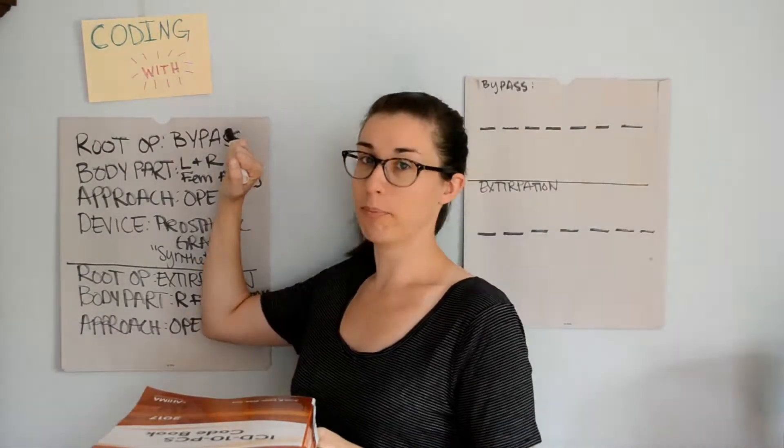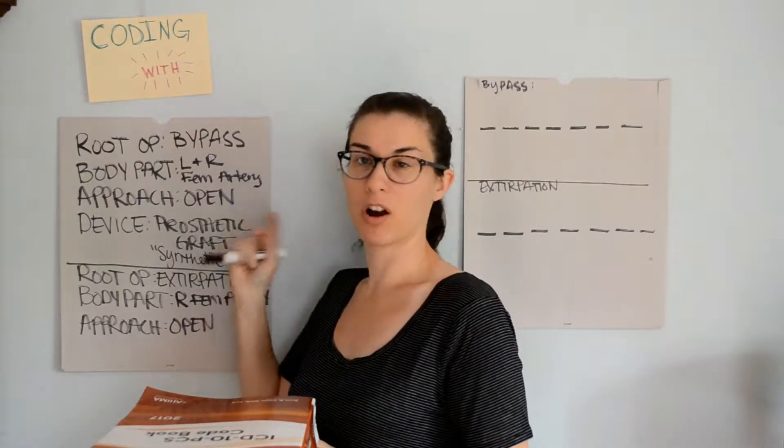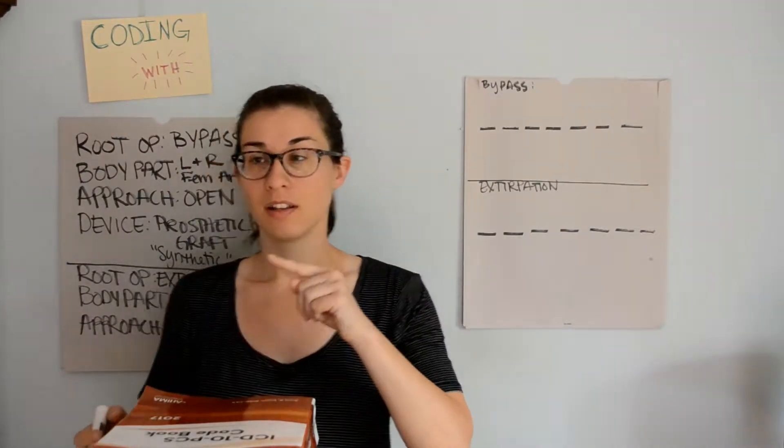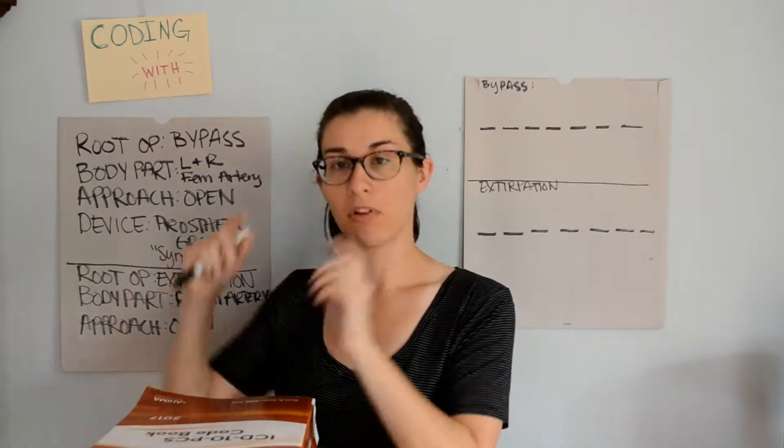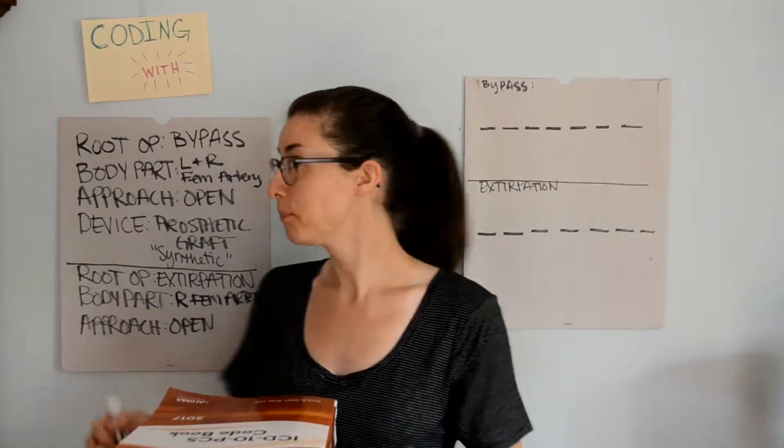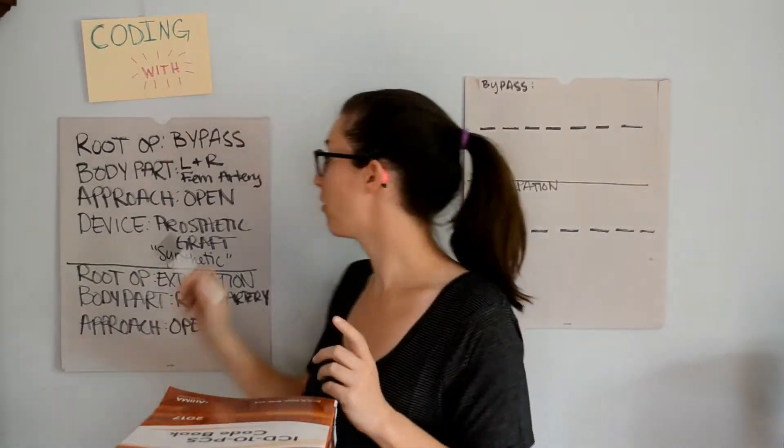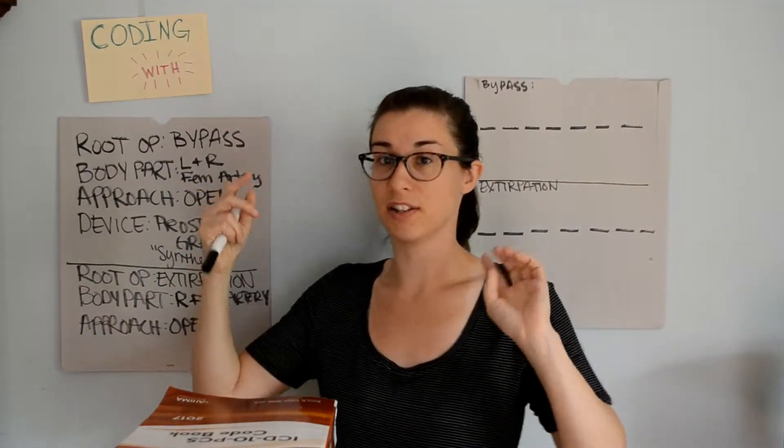I would suggest looking under bypass, and then looking for left or right femoral artery, either one. That will get you to the correct chapter or body system, where you can find the bypass table, and then continue to fill out your code. But, since I'm familiar with the setup of the book, I know that femoral arteries are going to be in the lower arteries chapter.